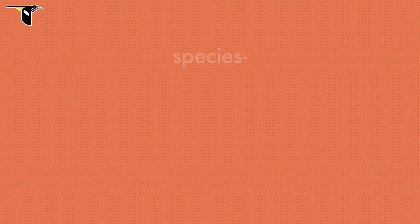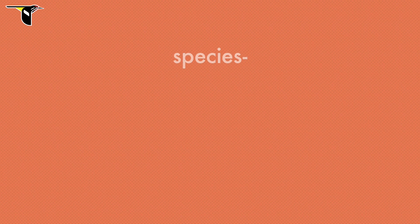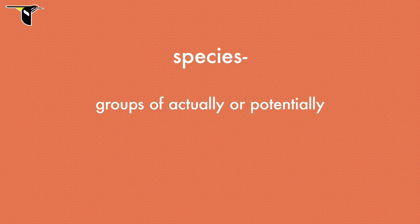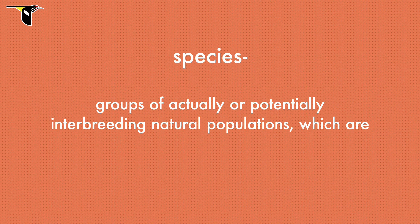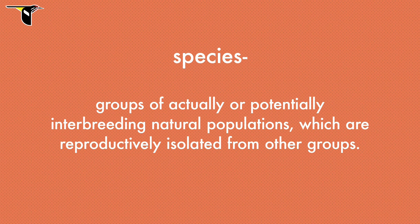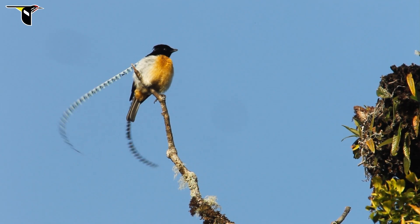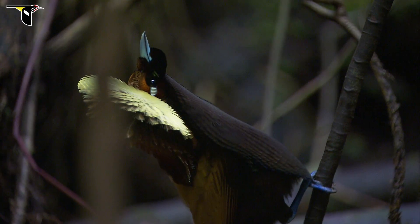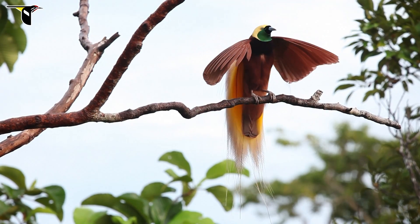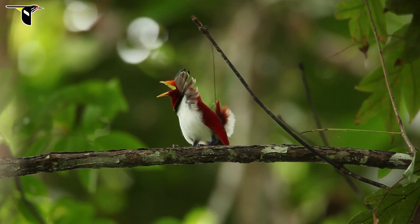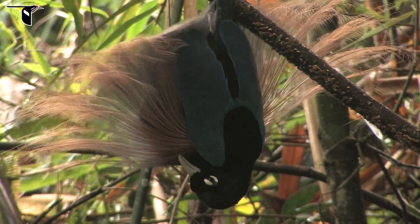Before we explain speciation, let's talk about what we mean when we use the word species. According to the classic definition, species are groups of actually or potentially interbreeding natural populations which are reproductively isolated from other groups. Speciation begins when groups become separated in space or become different enough in form and behavior that individuals from one group no longer regularly mate with individuals outside the group.